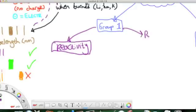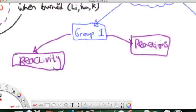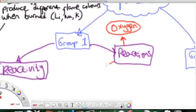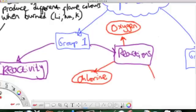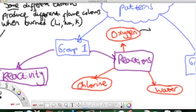We're going to look at reactivity of group 1 elements, and reactions of group 1 elements. We should know that group 1 is reactive with oxygen, it's reactive with chlorine, and it's also reactive with cold water.